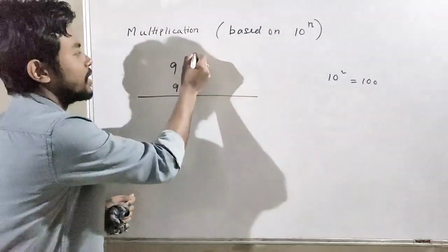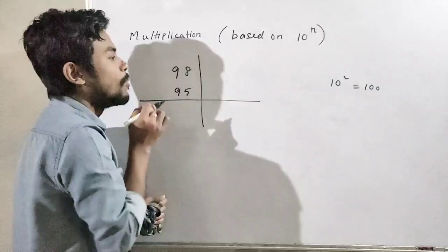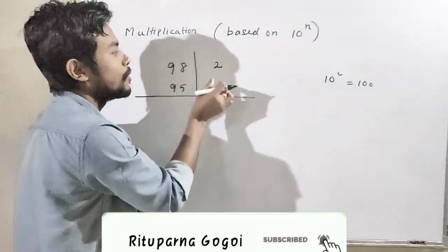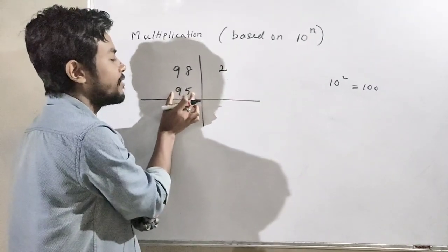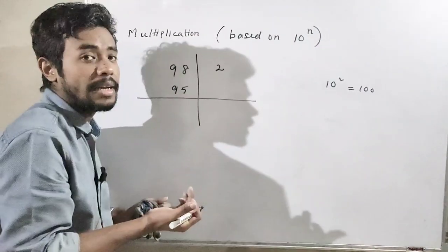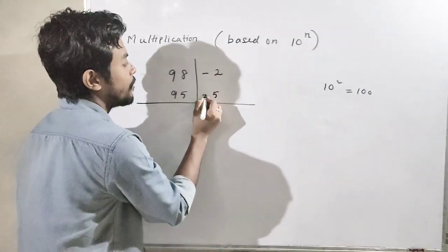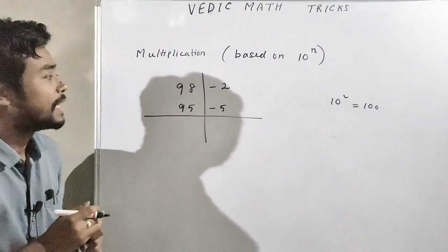Here we consider base as 10 square, that is 100. Now, 98 is how much less or how much more than 100? That is minus 2. And 95 is how much less? That is minus 5.